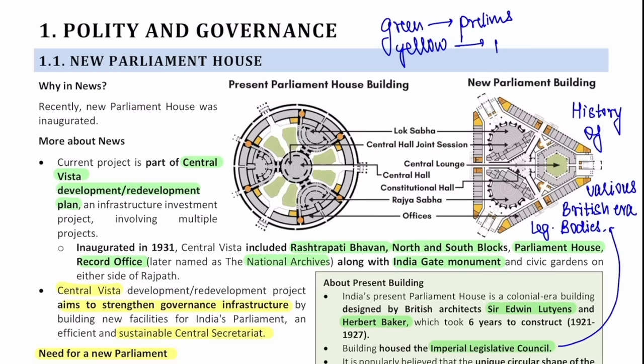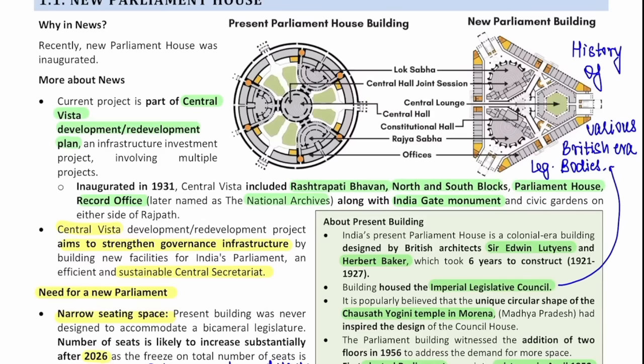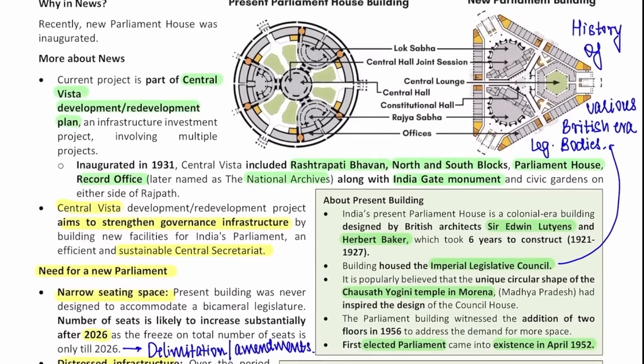The first article is about India's new parliament house. It is part of the Central Vista redevelopment plan. Central Vista includes the Rashtrapati Bhavan, North and South Block, Parliament House, the National Archives and the India Gate monument. The current building was built by Sir Edwin Lutyens and Herbert Baker, both British architects, and it housed the Imperial Legislative Council. As soon as you read this term 'Imperial Legislative Council,' you need to revise the history of various British-era legislative bodies and constitutional acts, as a lot of questions are asked on this.